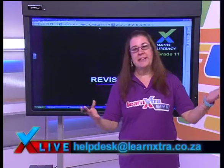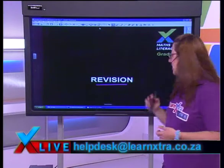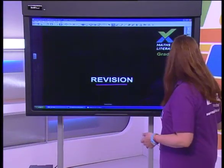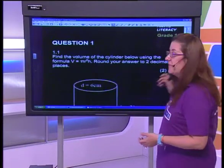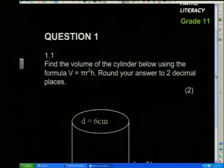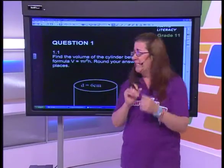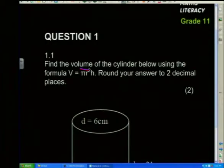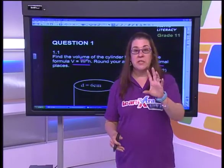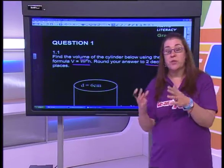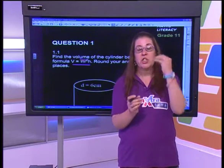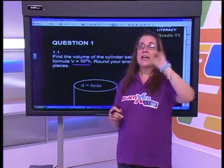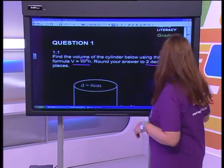Today we're going to be doing some revision. Let's just jump in and do some questions. The first question is some of my Grade 11's absolute favourite — area and volume. We're going to start with volume: find the volume of the cylinder below using the formula V = πr²h, and round off your answer to two decimal places. It's always important to read the question carefully so you know what they want you to round off to, and go back and reread the question just to check.